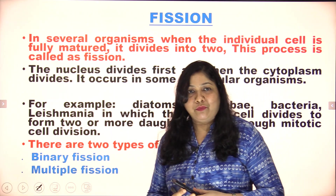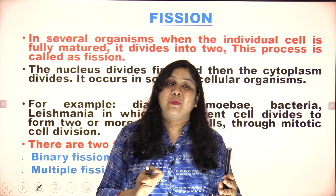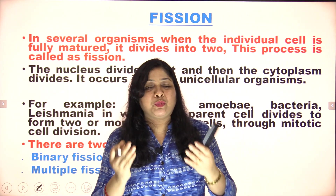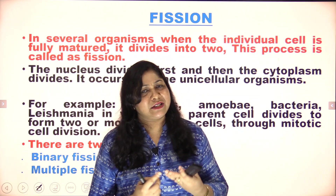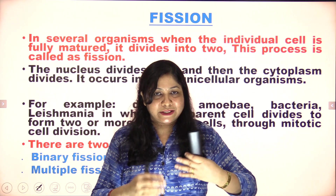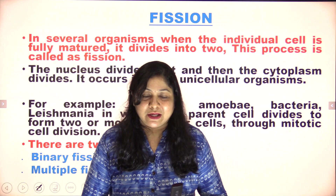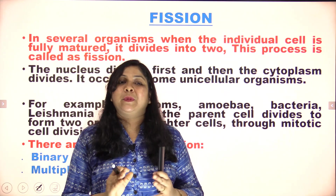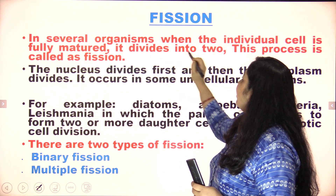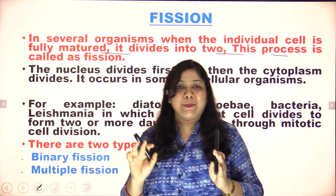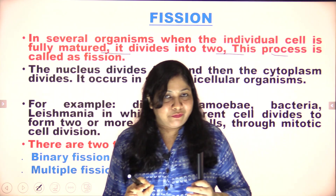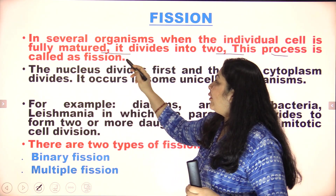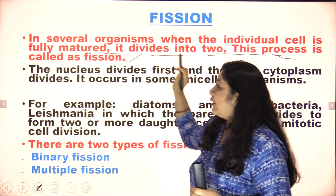First we will study about fission. What is fission? Fission means splitting. We are going to learn about fission — that is binary and multiple fission. If a single parent divides itself into two organisms, two offspring are produced, then this process is called binary fission. In multiple fission, the single parent divides itself multiple times and produces more offspring.